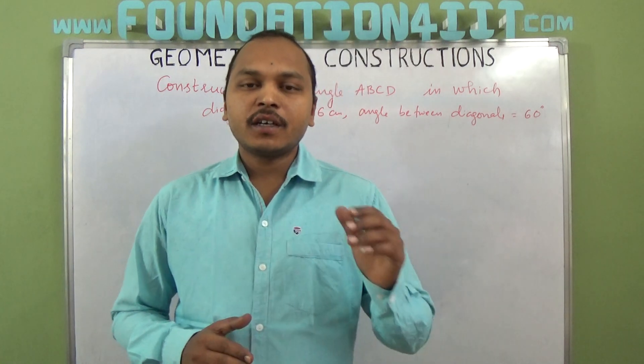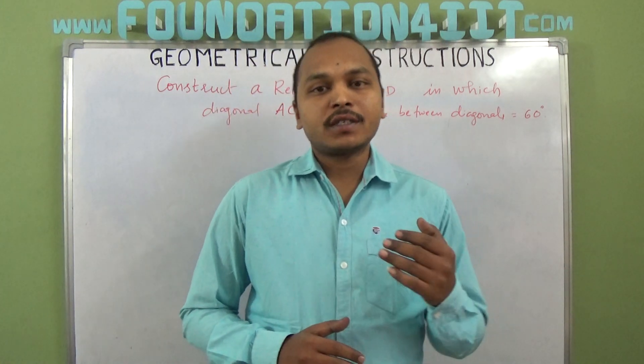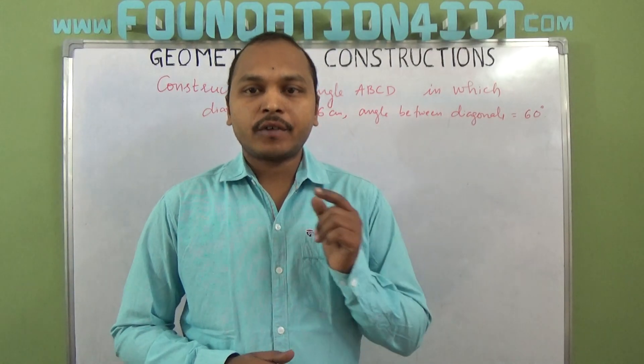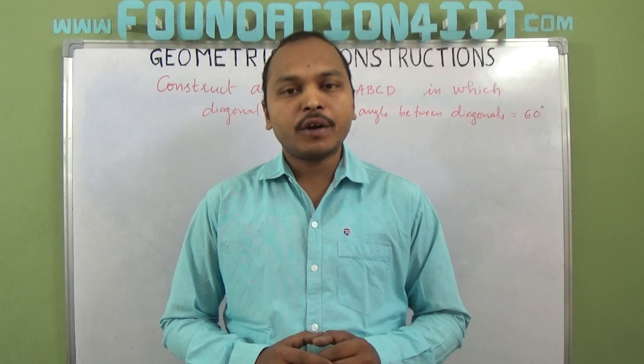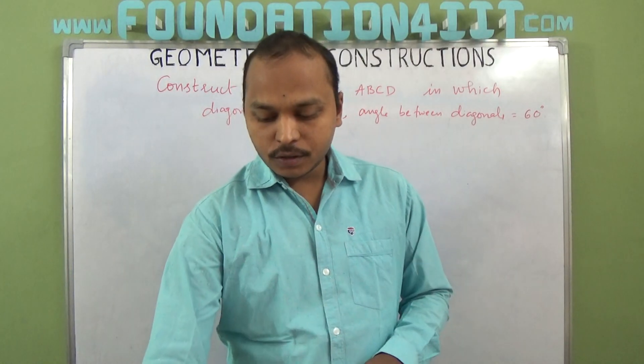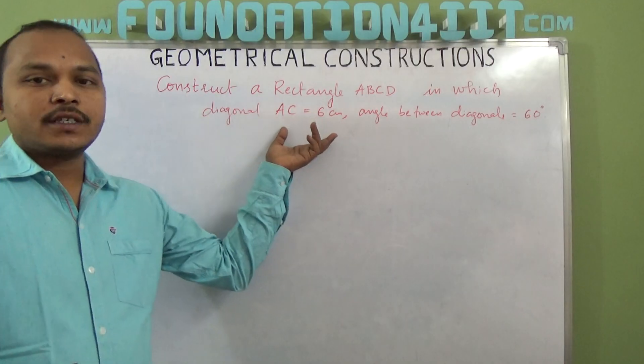Welcome to educational channel. In this video, I am going to explain how to construct a rectangle when one diagonal and angle between two diagonals are given. The diagonal AC is given as 6 centimeters and the angle between the two diagonals is 60 degrees.